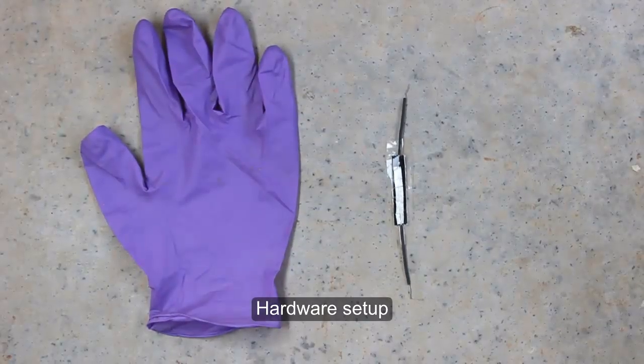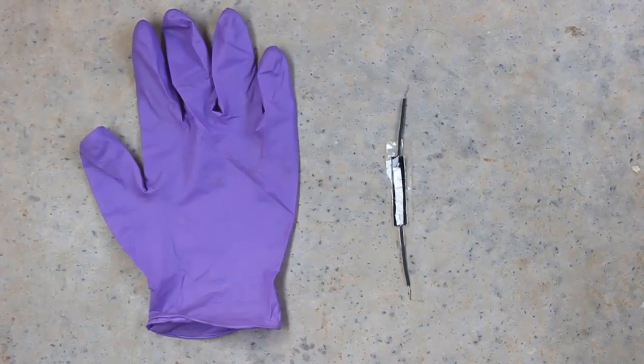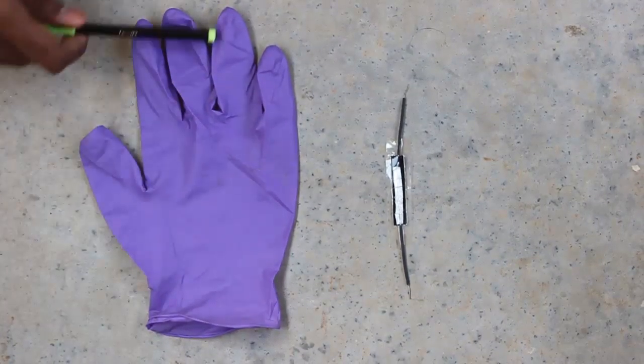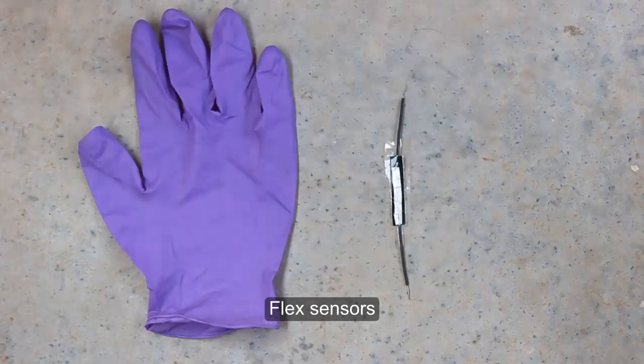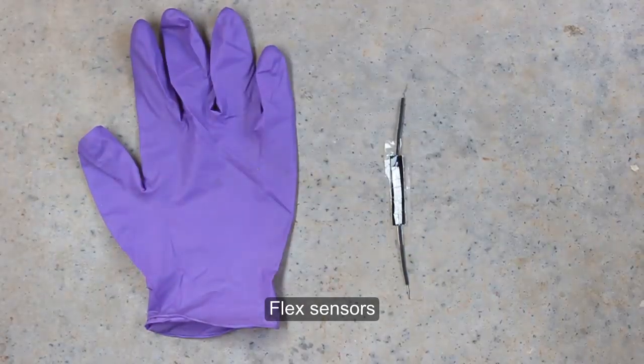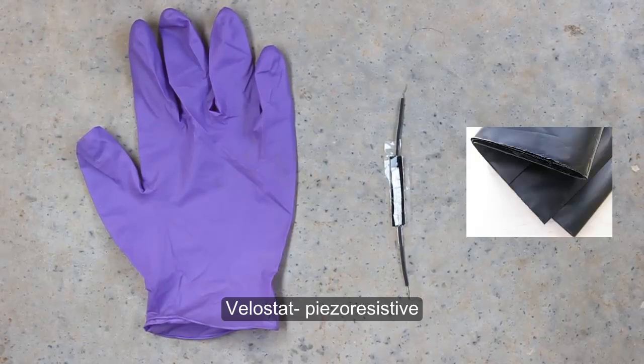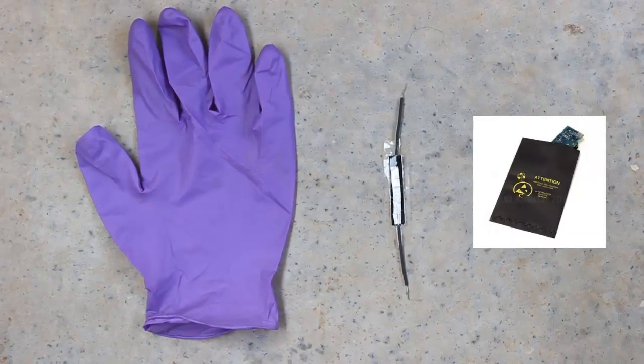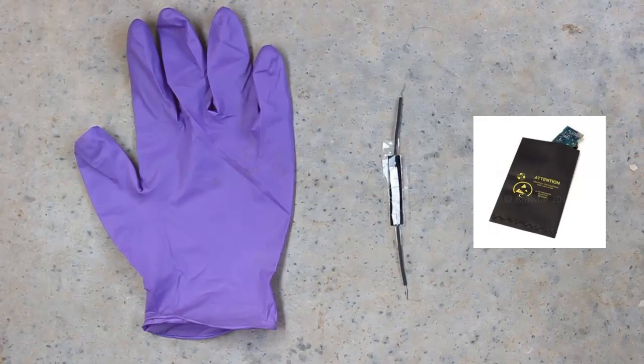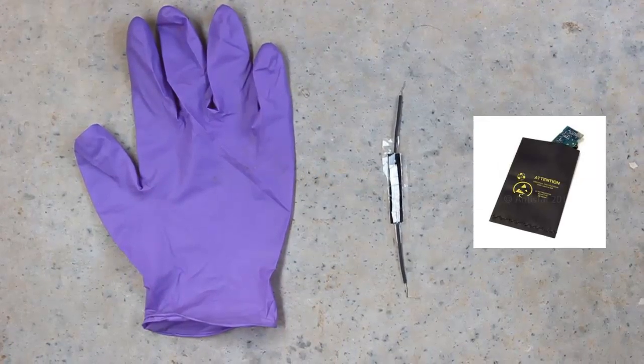We will now explain the hardware setup for HandTalk. We have used a nitrile glove with sensors placed appropriately for sensing bends in the fingers. These sensors are called flex sensors. They are made out of a material called Velostat, which is a piezo-resistive material. Velostat is available as static discharge bags and is extremely low cost. We were able to make all the sensors for under Rs.10.